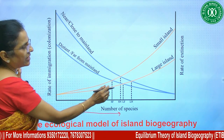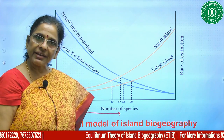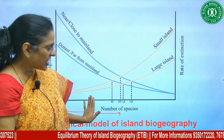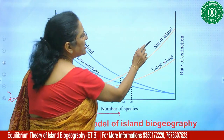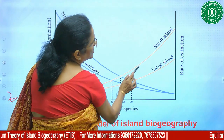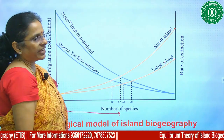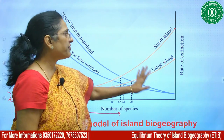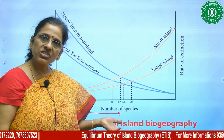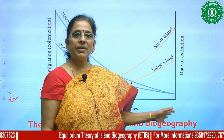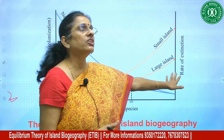Whether it is a near island or a large island — when there were no species, there is no question of extinction. As the species number increases, the extinction rate also increases. If we talk about size: on a small island, the extinction rate is higher, and on a large island, the extinction rate is lower, as the graph shows. On a small island, competition becomes stiff, resources run out, and the weaker ones are eliminated. On a larger island, there are more species and more resources, so the rate of extinction is lower.